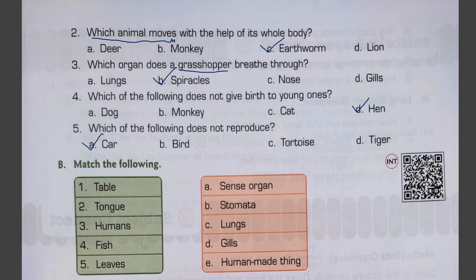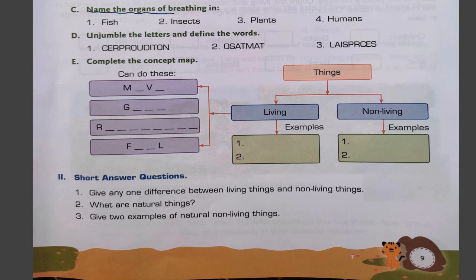Match the following: a man-made thing; tongue is a sense organ; humans have lungs to breathe; fish have gills to breathe; leaves use stomata to breathe in air. Name the organs of breathing: fish use their gills, insects use their spiracles, plants use stomata, and humans use lungs or nose to breathe.